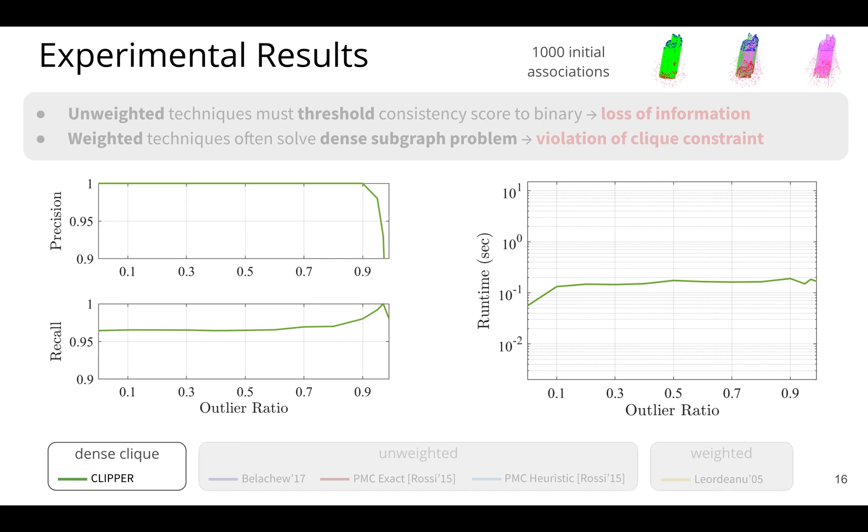So how well does this formulation and the relaxation thereof perform? Here are some results of Clipper. And the scenario here is we use the Stanford bunny and we vary the outlier ratio of the 1,000 initial associations shown here on the x-axis. And we're going to report the precision and recall, where of course precision and recall of 1 is the very best. So we see that Clipper runs in about 100 milliseconds and is able to achieve 100% precision up until about 90% outlier regime.